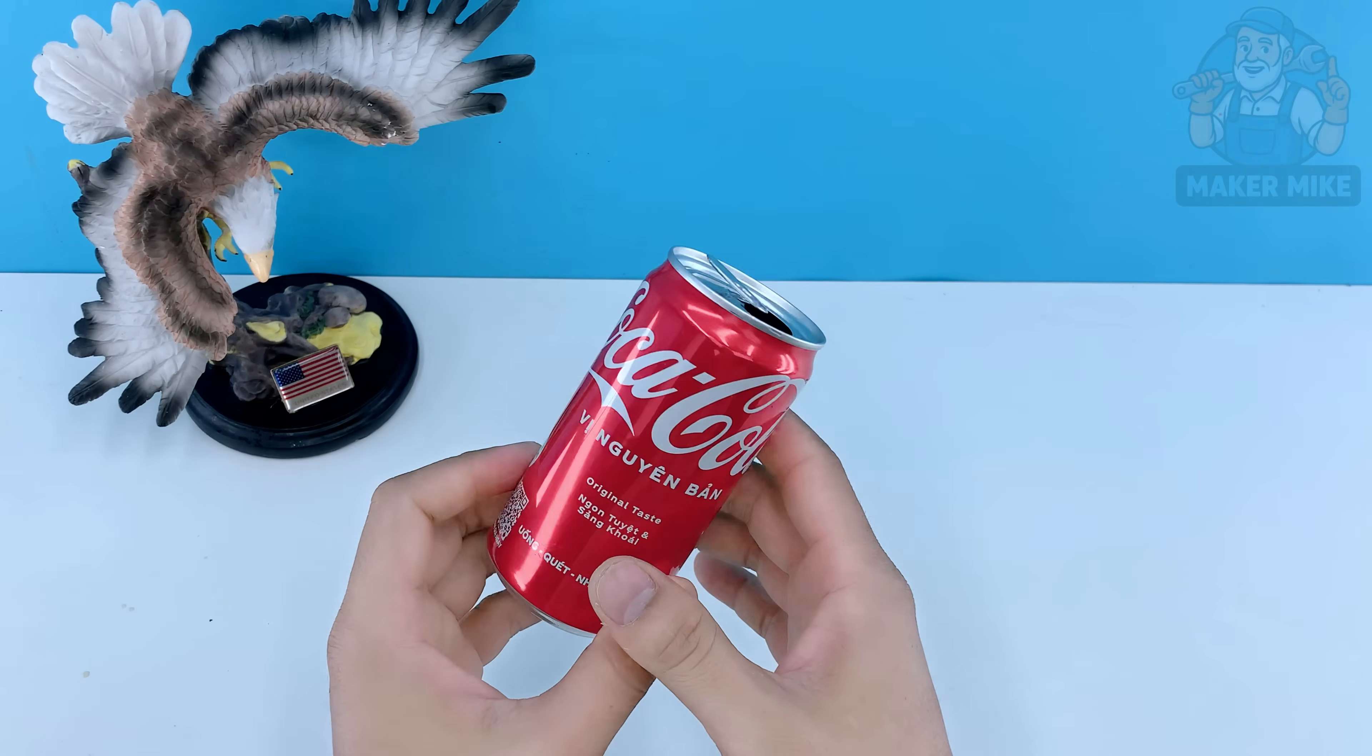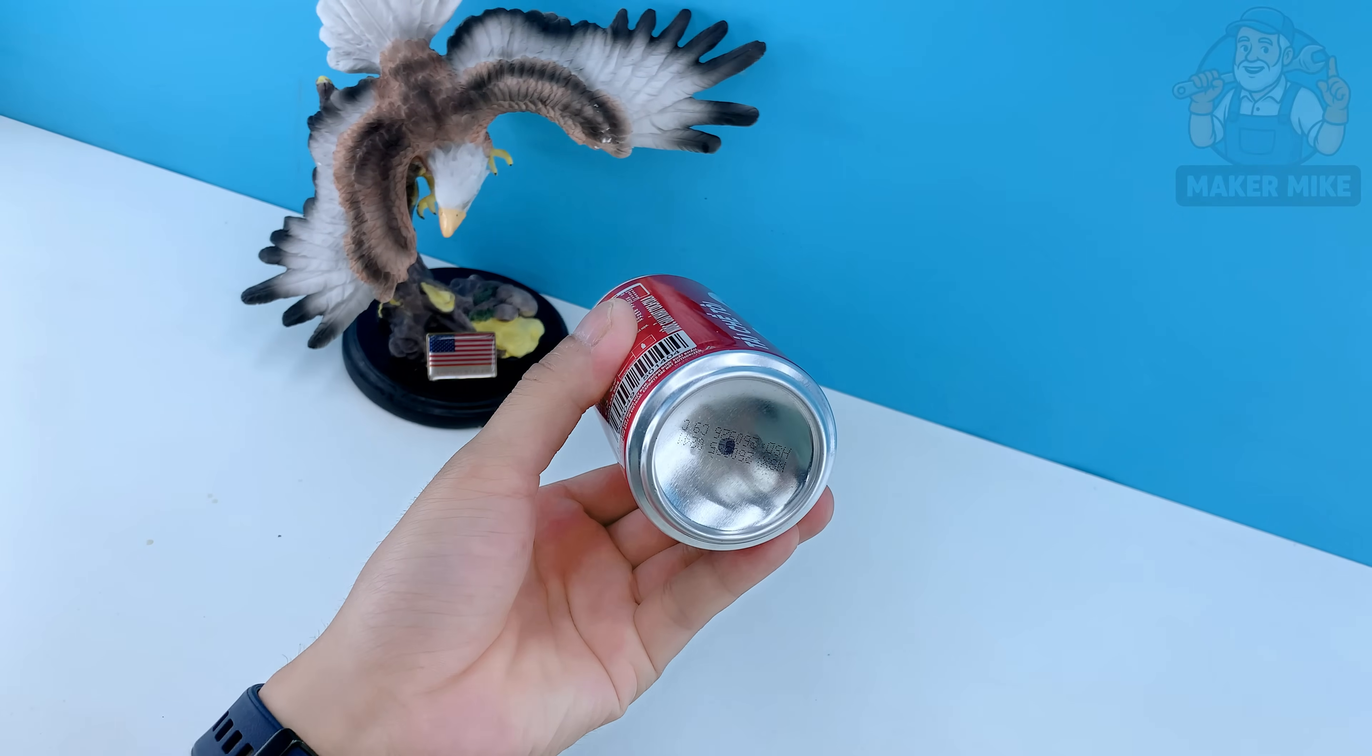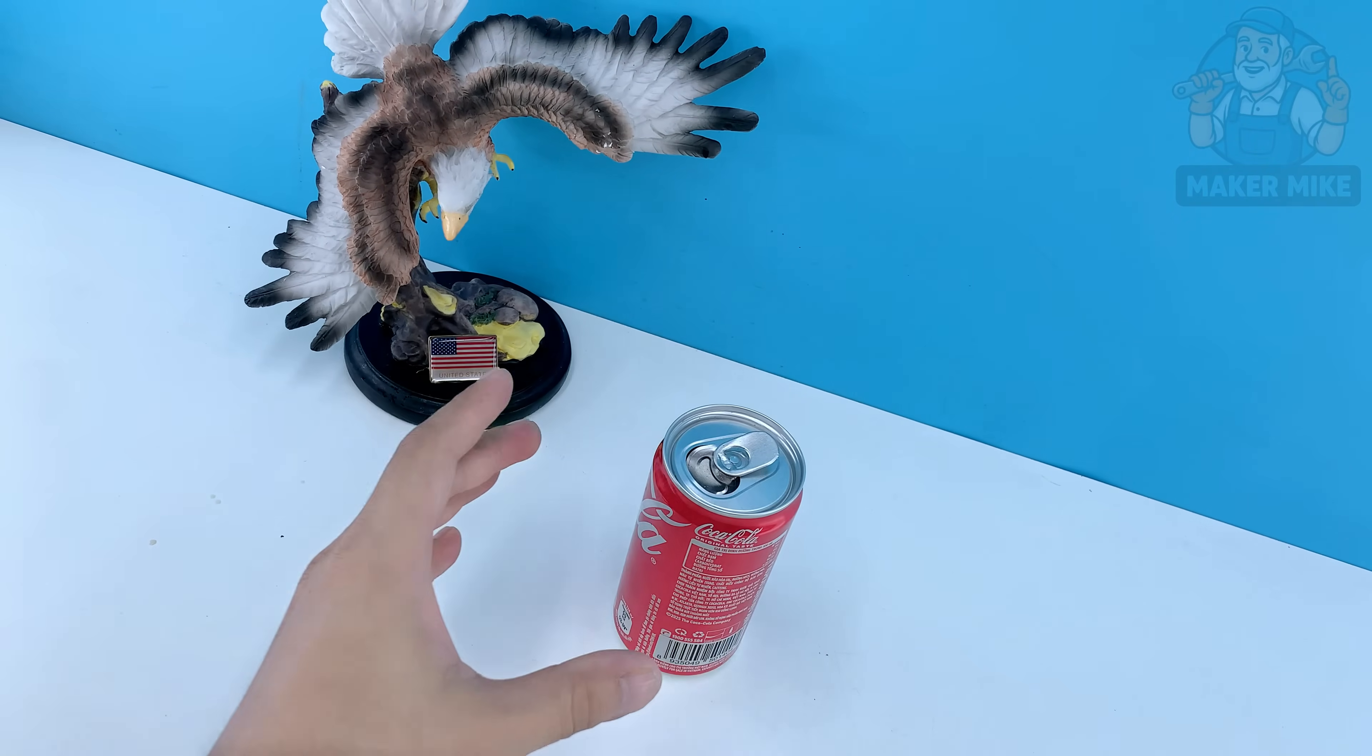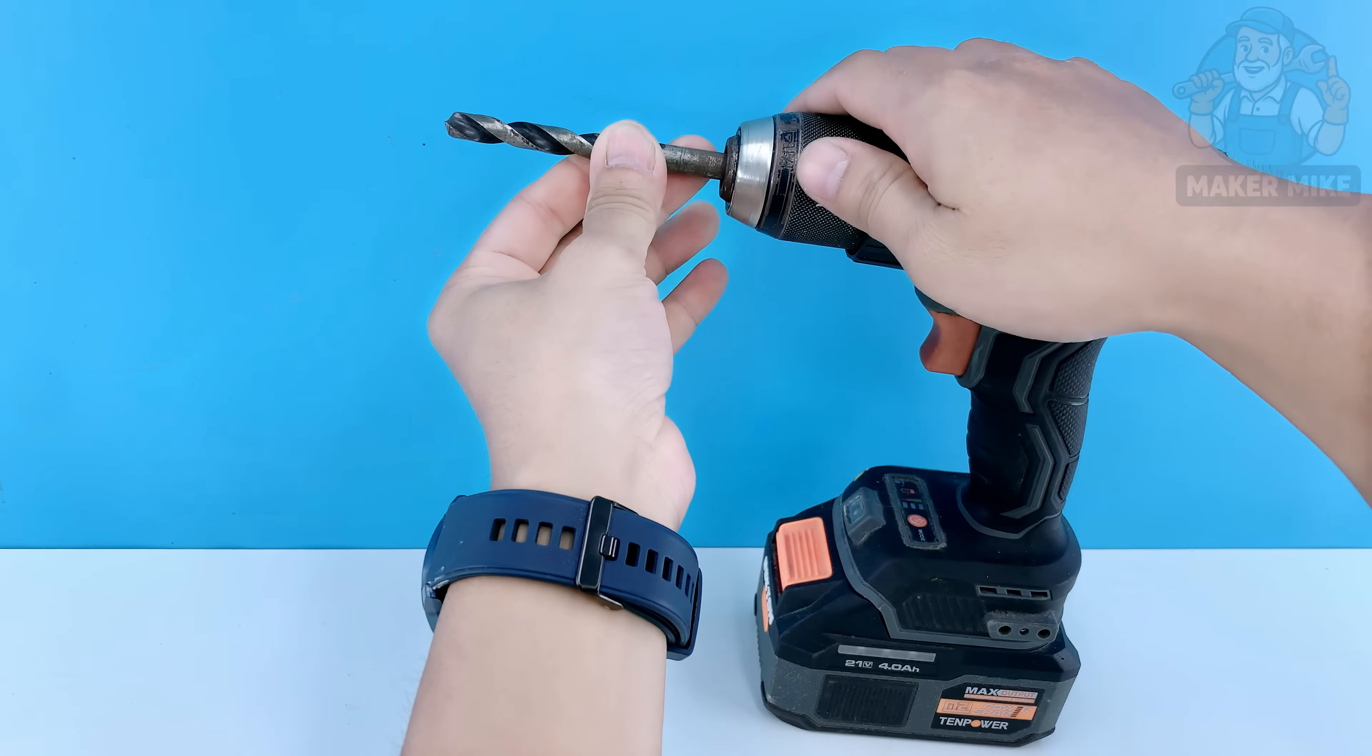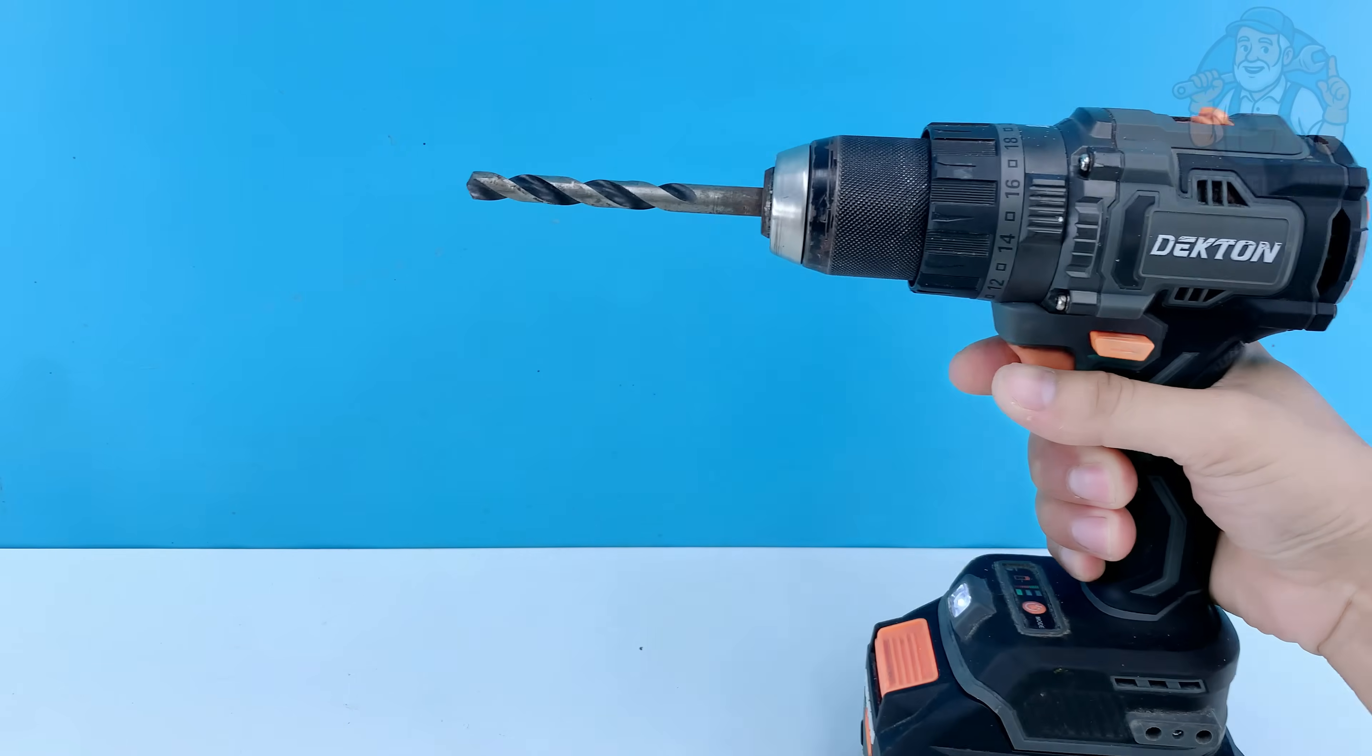Ever thought a simple can of coke could catch a TV signal better than store equipment? Let's put it to the test. Let's start with something simple, the base of our antenna. Grab an empty Coca-Cola can, rinse it out and make sure it's completely dry.